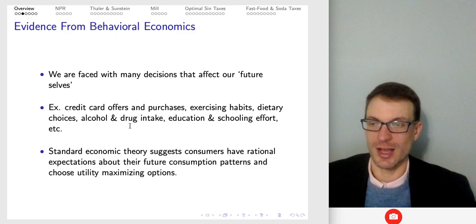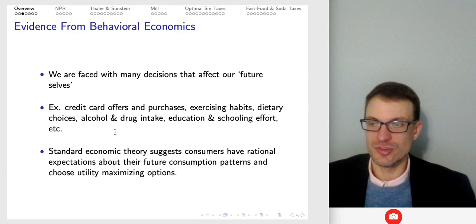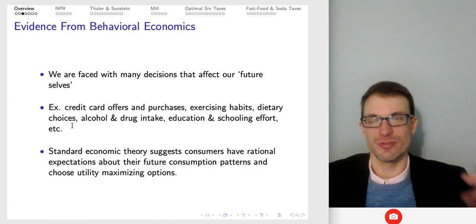Some examples would be credit card offers and purchases, exercising habits, dietary choices, alcohol, drug intake, education, schooling effort. These are all things that affect your present self, of course, but then have a really large cumulative effect over time on your future self.